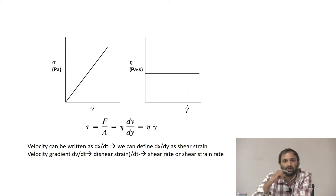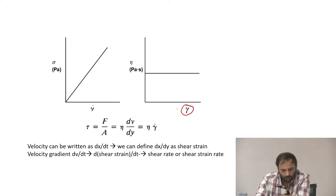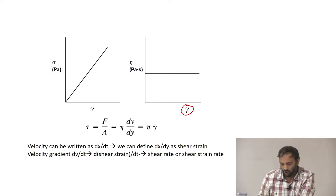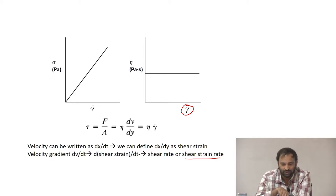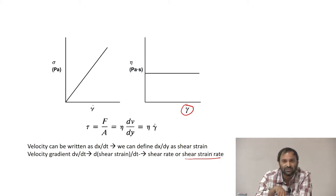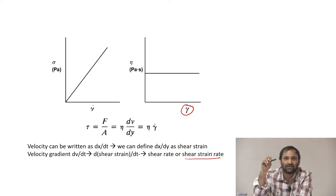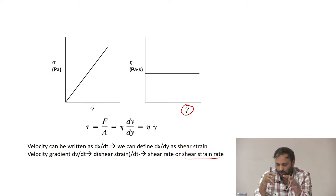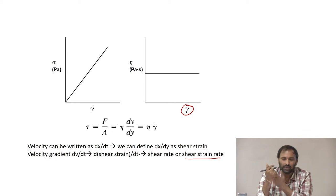The term gamma-dot refers to shear rate, which can also be called shear strain rate. It comes from the velocity gradient dv/dy, where dv can be expressed as dx/dt. The change in length by original length gives strain, and strain divided by time gives the strain rate. Different books use different terminology, so you should be aware of these terms.